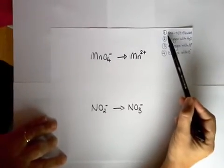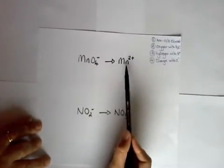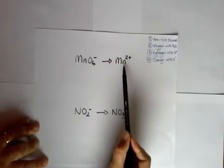So this time we're going to have four things that we do. We're going to first of all balance the non-oxygen or hydrogen element in there. So over here this is our manganese which is balanced.